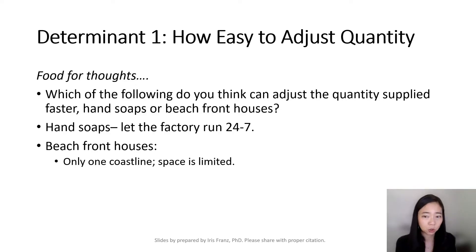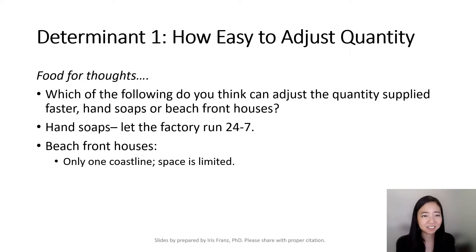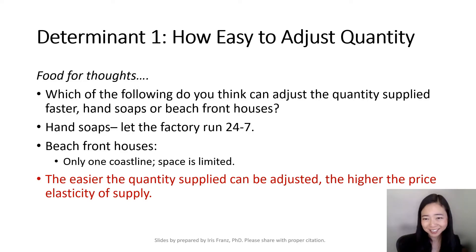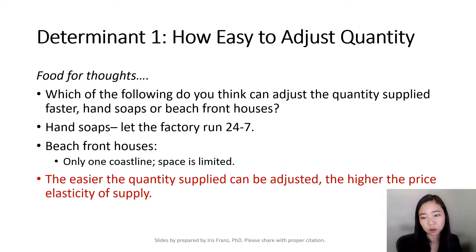If you're able to increase the quantity quickly, like hand soaps, then the price elasticity of supply is going to be greater. But if you're not able to adjust the quantity quickly, then your price elasticity of supply is going to be lower — like beachfront houses, where you are just not able to squeeze that many houses in front of the coastline. So the price elasticity of supply will be lower for beachfront houses.